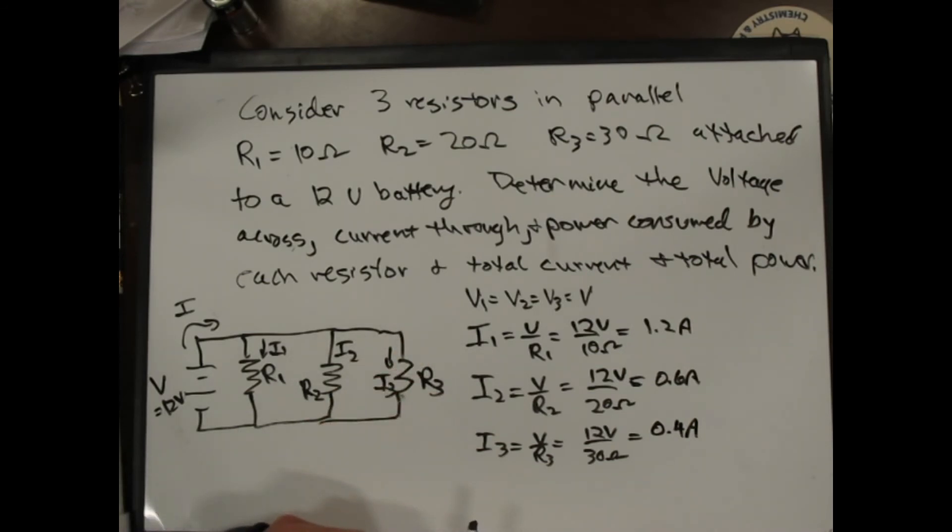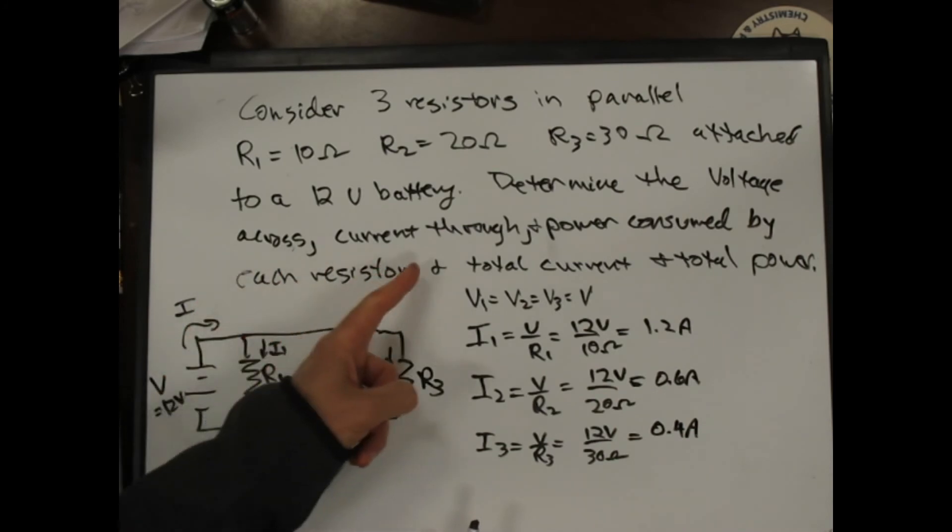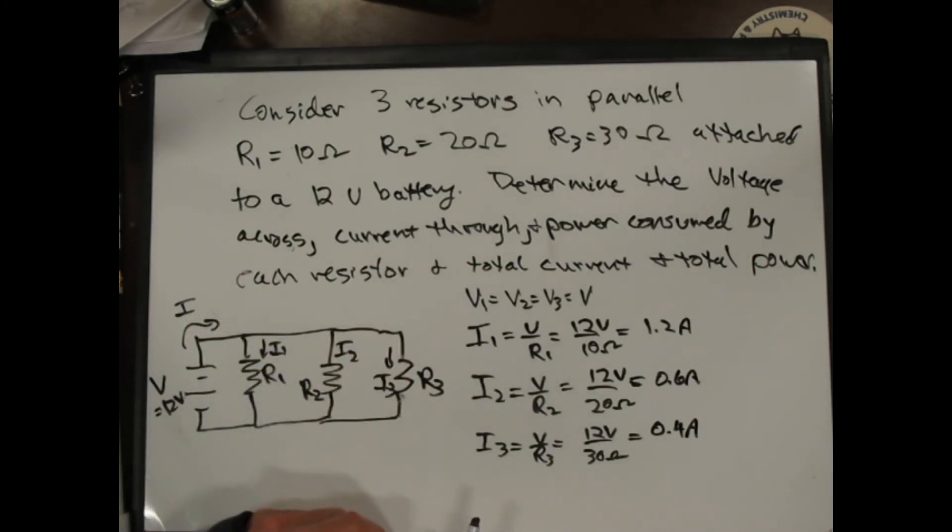So those are all my currents. I have the voltage across, current through, the power consumed by. Well, the power consumed is just V times I. And so the power consumed in one is V1 times I1. They all see the same voltage, it's just 12 volts. And so 12 volts times 1.2 amps is 14.4 watts.